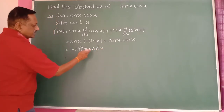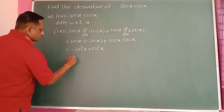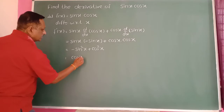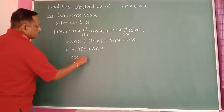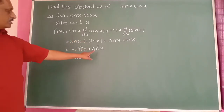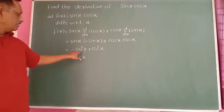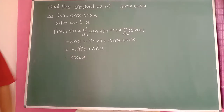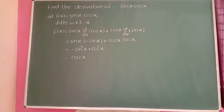Hence cos²(x) minus sin²(x) equals cos(2x). This is the answer.